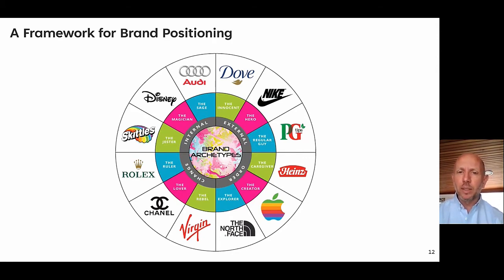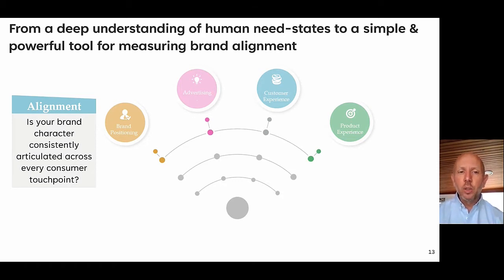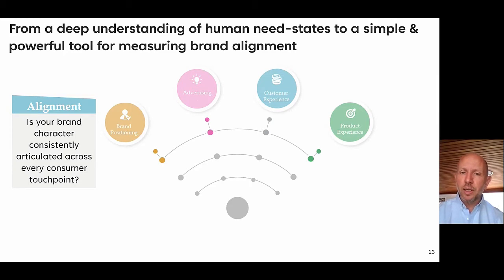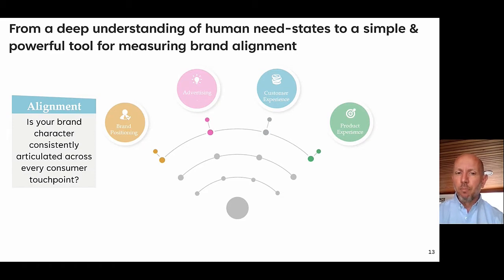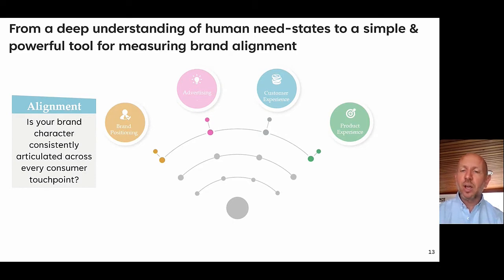You've probably seen archetypes used in brand positioning before, but what we're doing at BoxClever is using them differently — quantitatively, to do something new. We're using them not just as a brand positioning tool, but as a means to an end: talking about alignment across touchpoints. If we know what our brand's archetypal positioning is, we can then ask — are we bringing to life the same archetype in our advertising? In our customer experience? In our product experience? Do we have alignment across our touchpoints?